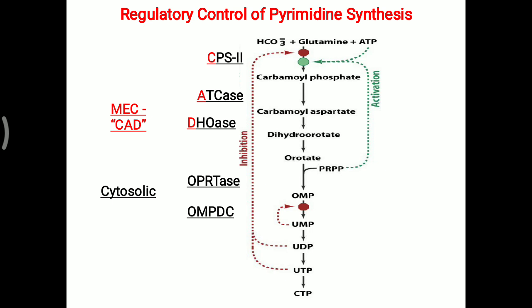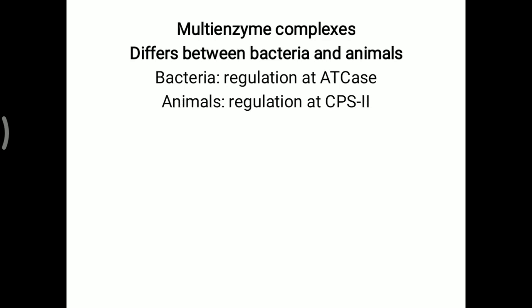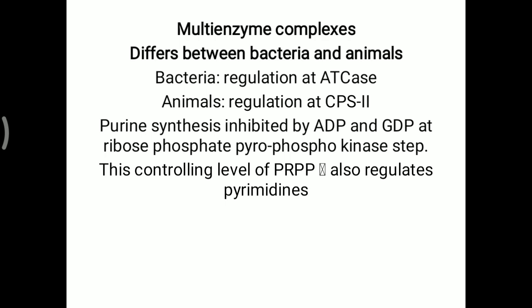Combinedly, all these five are the main regulators of pyrimidine synthesis. Further, that multi-enzyme complex is the main regulation point. There is some difference between bacteria and animals for pyrimidine synthesis: bacteria regulate at the level of ATKs, while animals regulate with the help of CPS2 enzyme. Same as purine synthesis — which is inhibited by ADP and GDP at the ribose phosphate pyrophosphokinase step — this controlling level of PRPP also regulates pyrimidine synthesis.